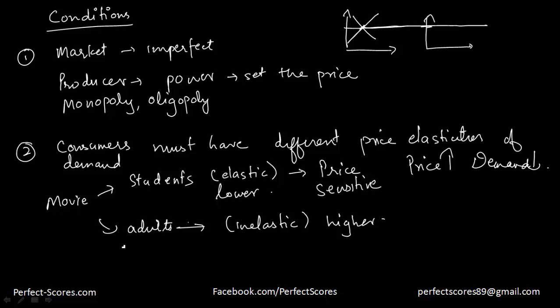In this world, information is widely known. You can't charge students less and adults more without adults finding out. So the elasticities must be different. The third condition is that producers must be able to separate the consumers — they must be able to differentiate between them.